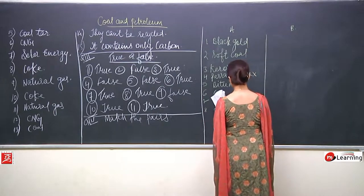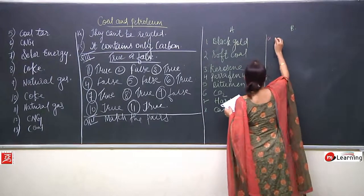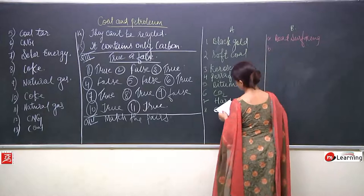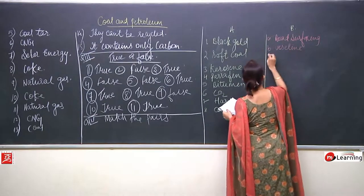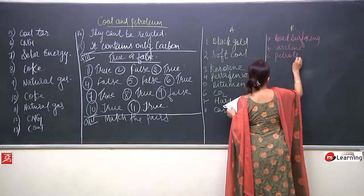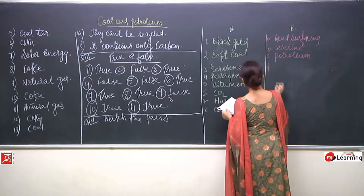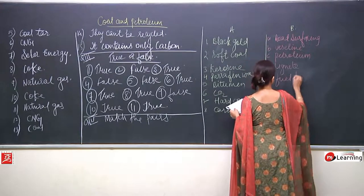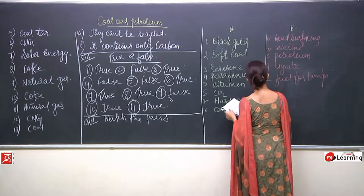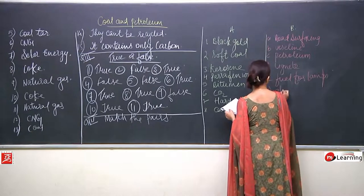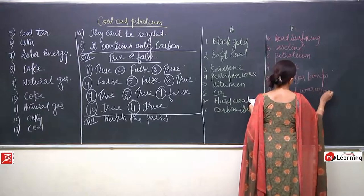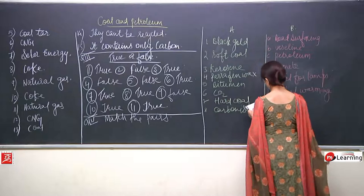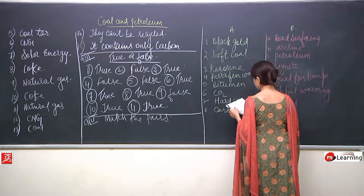Now here also A. A is road surfacing — we should know the answer both ways. B is vaseline. C is petroleum. D is lignite. E is fuel for lamps. F is global warming. G is what coal, and H is anthracite.